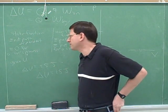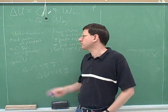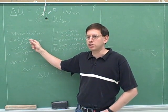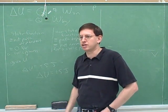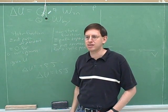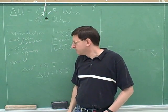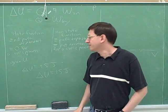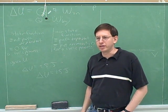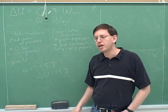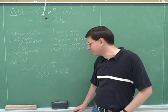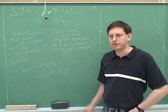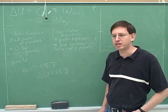Another way to put it: a state function only depends on the initial and final points, not on the path. In those two experiments with my planner, what was the same was the initial and final points — both started on the floor and both ended on the chalk ledge. The difference was that the path was much more complicated for the second experiment.